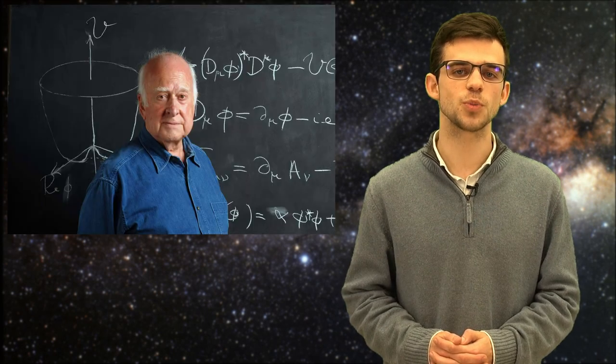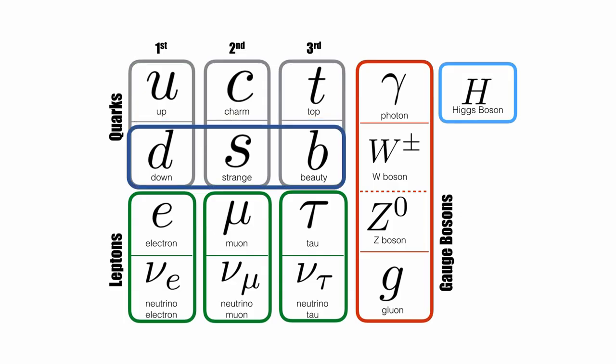In the standard model, there is only one way of giving masses to the matter particles. This is done through the Higgs mechanism and the so-called Yukawa couplings, the terms that couple the Higgs to the three types of massive matter particles: the up-type quarks, the down-type quarks, and the charged leptons.